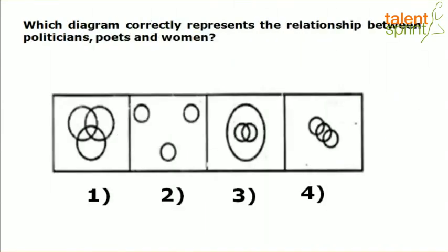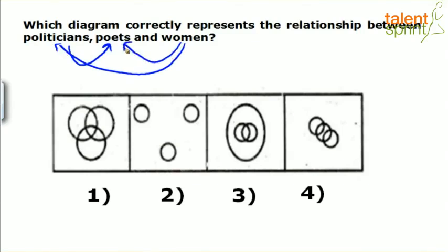Next: which diagram correctly shows the relationship between politicians, poets and women? Can politicians be poets? Yes. Can women be politicians? Yes. Can women be poets? Yes. Every object here is connected to every other object — politicians can be poets, politicians can also be women, and women can be poets. So there is a relationship between every two possible pair.